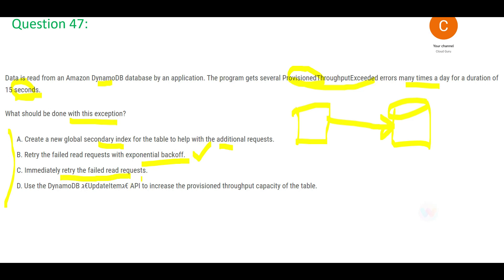Option C says immediately retry the failed read request — this won't work. The ProvisionedThroughputExceeded error is a 'do not disturb' signal, and immediately retrying just disturbs the service again. Option D says use DynamoDB UpdateItem API to increase provisioned throughput capacity — but UpdateItem is for updating fields in a table. To increase provisioned throughput you need to increase the read and write capacity units. So that is the wrong option.